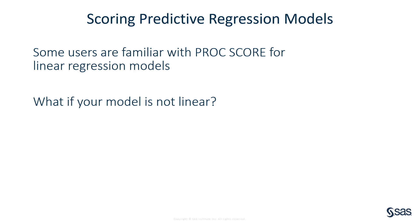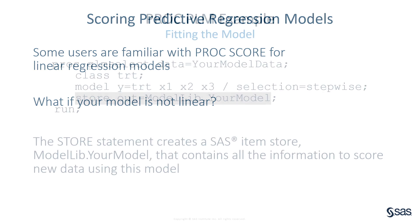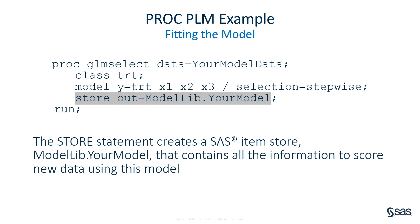Now let's take a look at three modern techniques for scoring predictive regression models. Let's look at an example using PROC PLM. When you are fitting a model with a procedure like PROC GLM SELECT, you can package up the model results, including the estimated model parameters, into a SAS item store using the STORE statement in PROC GLM SELECT. This item store can be used to score new data today, tomorrow, or even next year.